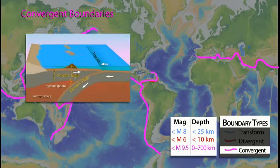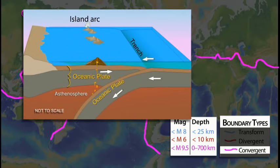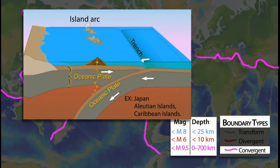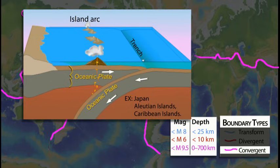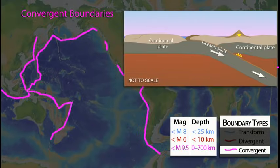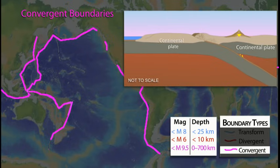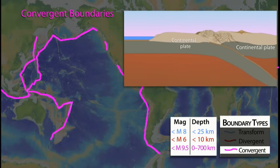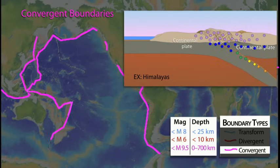Similar processes occur when an oceanic plate subducts beneath another oceanic plate. Here, an ocean trench marks the location where the plate is pushed down into the mantle. In this case, the line of volcanoes that grows on the upper oceanic plate is an island arc. Not all convergent boundaries involve subduction. When the continental parts of converging plates come together, neither can subduct. Instead, the two continents collide, producing horizontal deformation and uplift in the continental crust to build mountains and plateaus. Frequent shallow earthquakes in the continental collision zones can exceed magnitude 8 and are generally less than 40 kilometers deep.